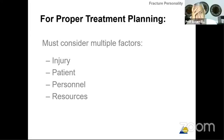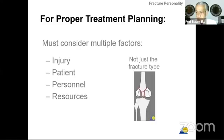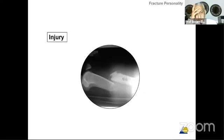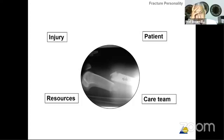You must consider the type of injury, the type of patient, the personnel, and the resources you have to treat this fracture. It is not just fracture type. We cannot say I will go to the theater only to treat a supracondylar or intercondylar fracture. You have to take into consideration a lot of factors. When you see a fracture of the femur, for example, and you want to decide whether to nail, plate, use external fixation, or whatever type of treatment, you have to consider the injury, the patient, the care team, and your available resources.